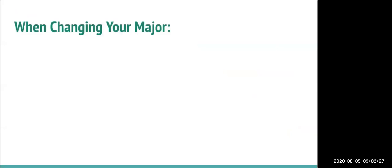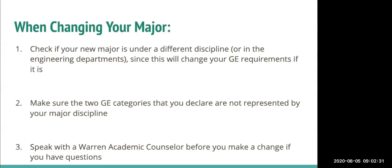When changing your major, there are three things to consider: First, check if your new major is under a different discipline or in the engineering department, since this will change your GE requirements. Second, make sure the two GE categories you declare are not represented by your major's discipline. Third, please speak with a Warren academic counselor before making a change if you have questions.